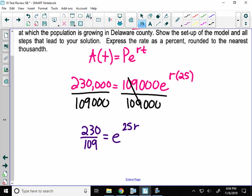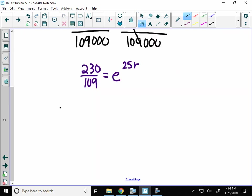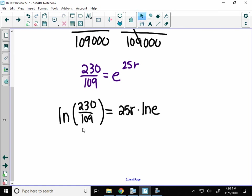Now, I have E to a power, and in order to take the log of both sides here, I need to take the natural log of both sides. So I'll take the natural log of this fraction, equals that exponent moves down in front, and remember the natural log of E is 1. So I can ignore that and jump right to dealing with the 25R. I can divide by 25.